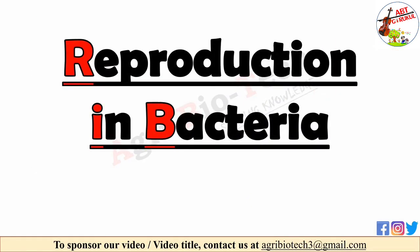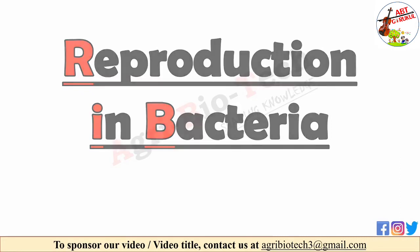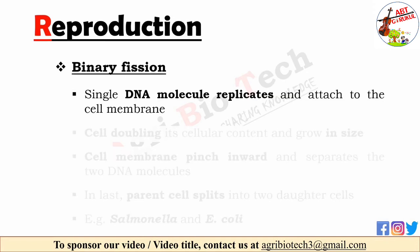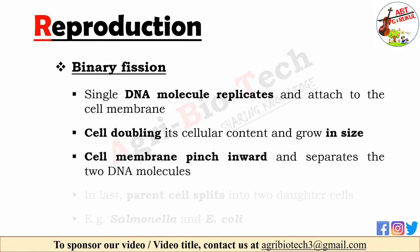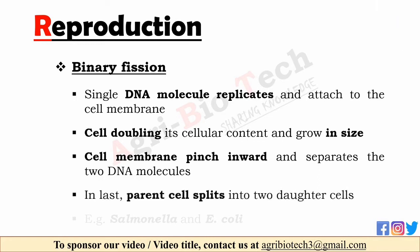Now let's move toward reproduction or multiplication of bacteria. Most bacteria multiply by a process called binary fission. During this type of asexual reproduction, the single DNA molecule replicates and both copies attach at different points to the cell membrane. The bacterial cell then grows large in size by doubling its cellular content. Once the bacterium doubles its original size, the cell membrane begins to pinch inward at the center. Finally, a cell wall forms which separates the two DNA molecules and the parent cell splits into two identical daughter cells.